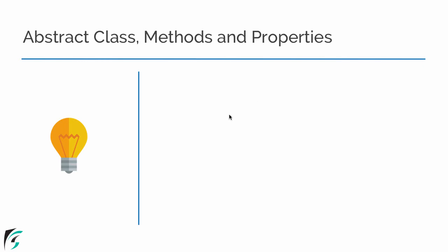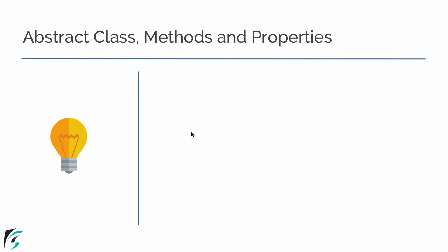The classes in Kotlin can also be abstract in nature. Now what do we exactly mean by abstract, we will check it out shortly. Before going into what is abstraction in Kotlin, first let me show you what are abstract classes, methods, and properties inside the IntelliJ IDE straight away. Thereafter we will discuss all the properties of these classes and methods.